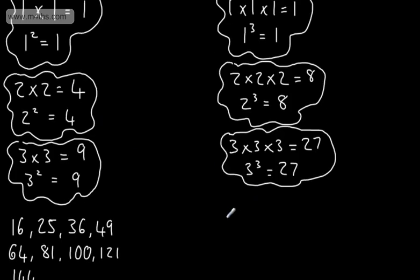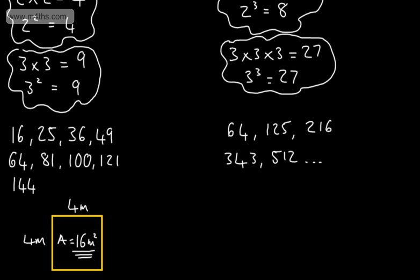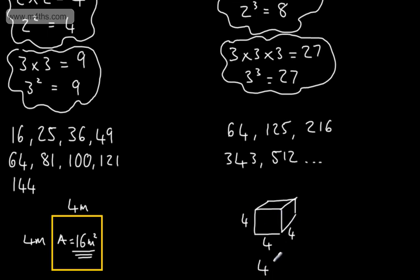Let's do a few more cube numbers. 4 cubed is 64. 5 cubed is 5 times by 5 times by 5, which is 125. 6 cubed is 216. 7 cubed is going to get 343. 8 cubed is 512, and so on and so forth. All of these are cube numbers. If we just sketch up a quick cube and we wanted to find the volume, with side lengths of 4, we could say 4 cubed is equal to 4 times by 4 times by 4, which is going to give me 64. So if this were centimetres, it would be centimetres cubed. This is a cube number.